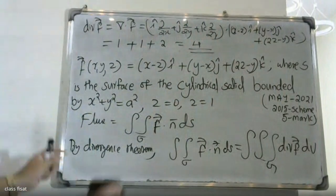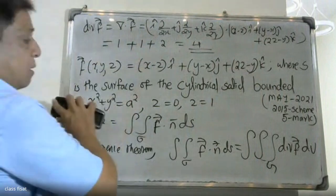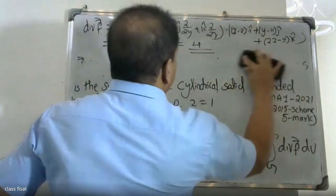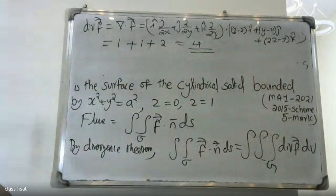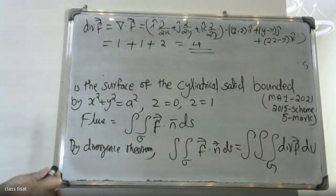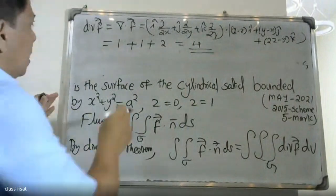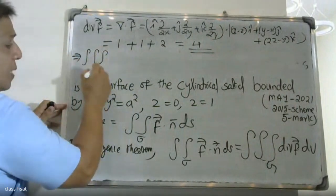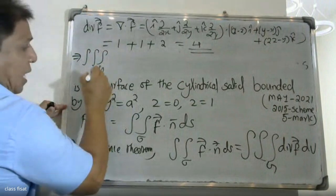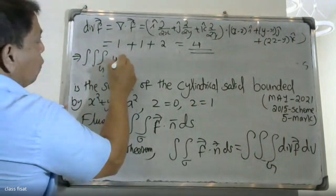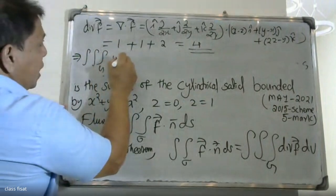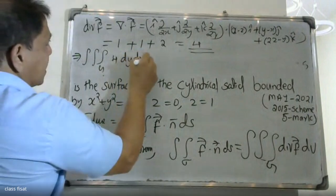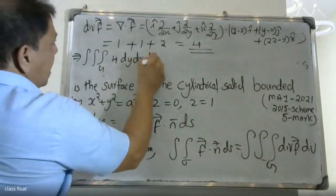In the next stage we will apply the formula — we will substitute into the formula. Therefore the triple integral over G of the divergence times dV equals the triple integral of 2 dV, integrated over dx dy dz.